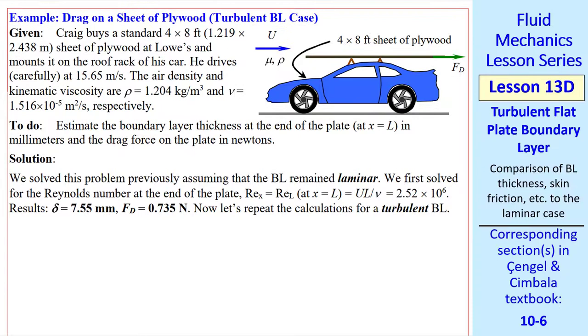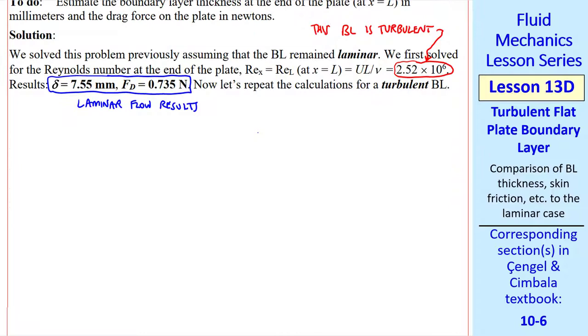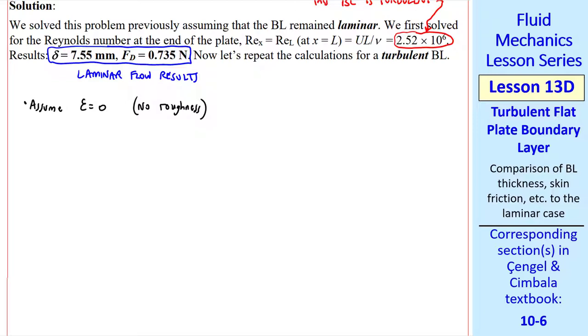Now, let's do some example problems. As promised in a previous lesson, I now repeat this exact same problem, where Craig drives with a piece of plywood on his roof rack at a given speed and air properties. We want to calculate boundary layer thickness at the end of the plate and the drag force on the plate. In a previous lesson, we assumed that the boundary layer was laminar. But the Reynolds number was above 10 to the sixth. And as I pointed out in the previous lesson, at such a high Reynolds number, this boundary layer is turbulent. These were our laminar flow results for comparison. Now, let's solve for the turbulent boundary layer case. We assume epsilon equals zero. In other words, the plate is smooth. We'll use column B, the one-fifth law equations.